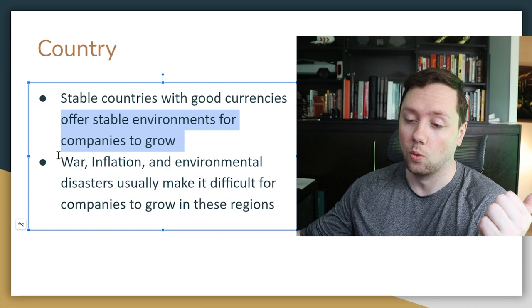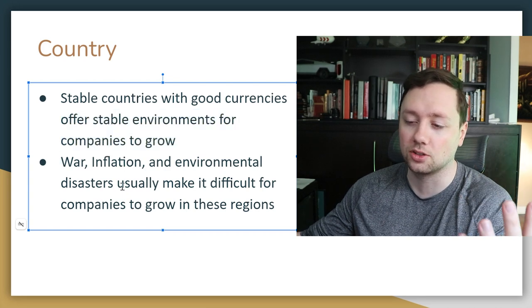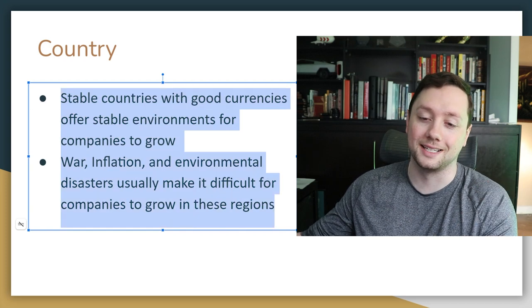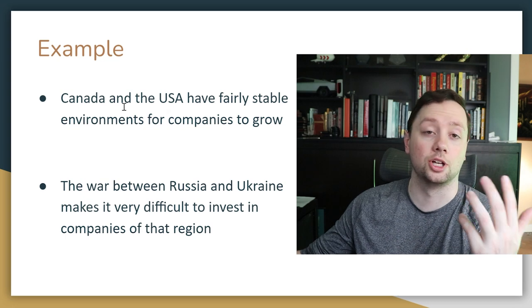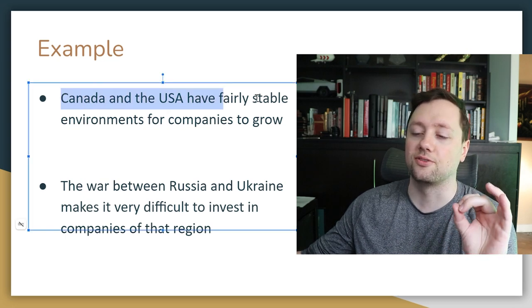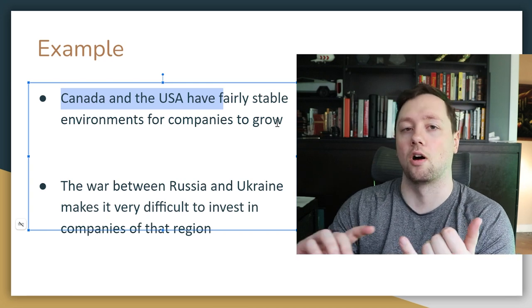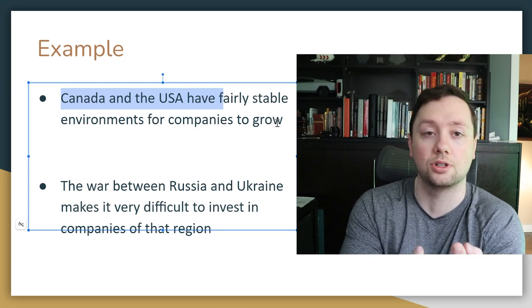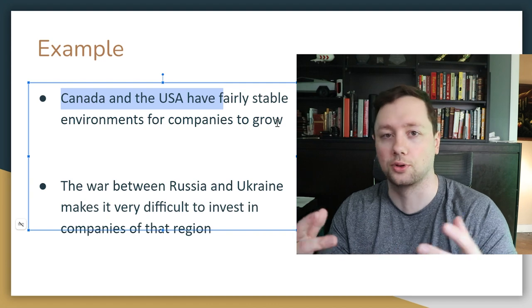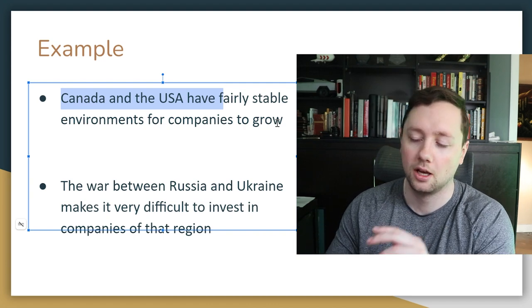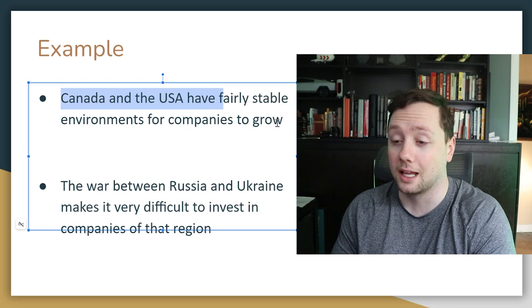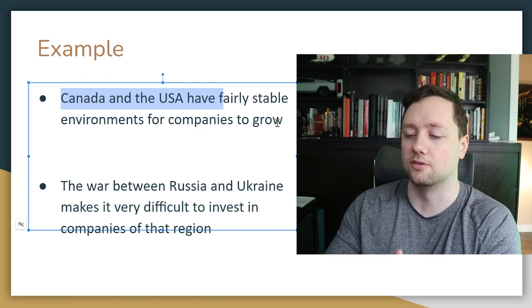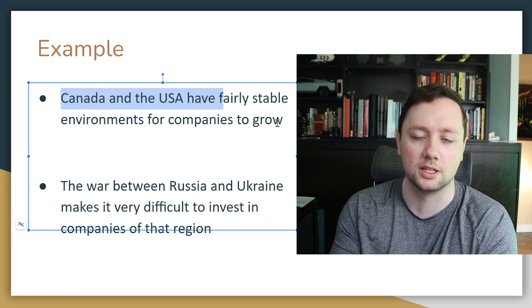Things like war, inflation, and environmental disasters usually make it difficult for companies to grow in certain regions. On the positive side, Canada and the USA have fairly stable environments for companies to grow. Our currencies and governments are fairly stable, and we have a 50 to 100 year track record of stable operations. Europe and Australia have also been fairly stable places to invest and for large corporations to grow.